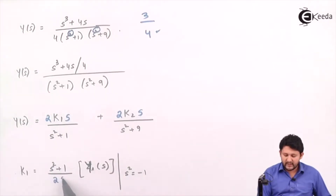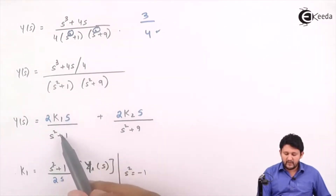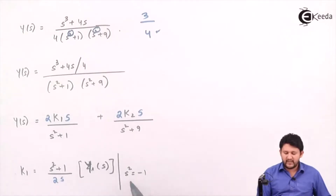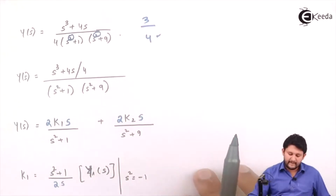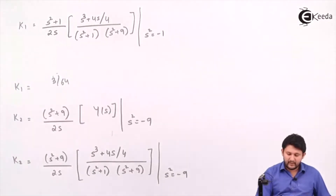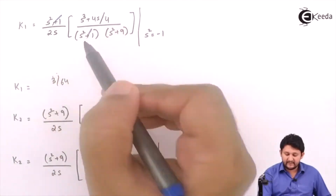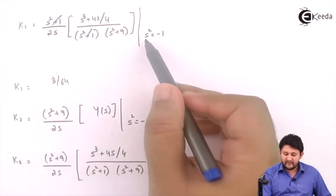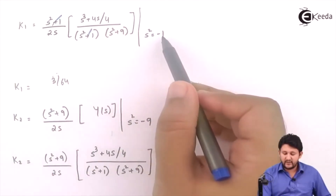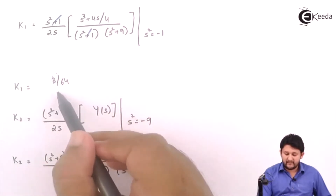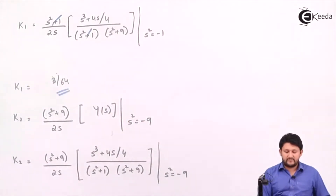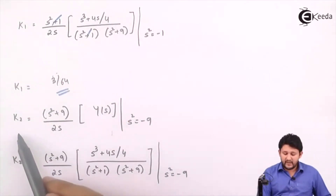Bring 2s over here into Y(s). The denominator of k1 will be equal to zero, so set s² = -1. Put the value into Y(s) and do all the cancellation. Wherever you get s², put the value of -1. You will get the value of k1 = 3, a positive shift.